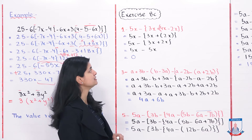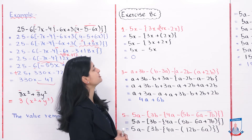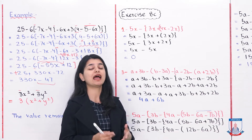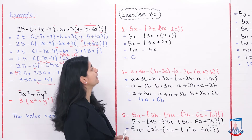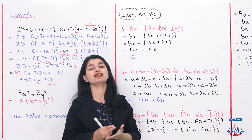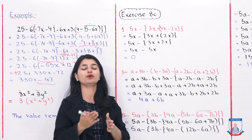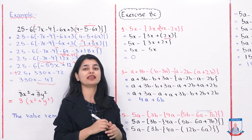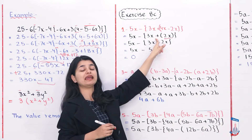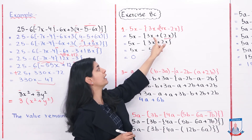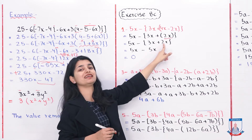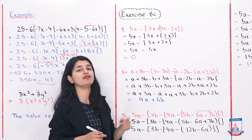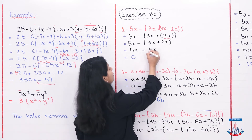Question number 1 is: 5x minus bracket 3x plus parenthesis 4x minus 2x, parenthesis closed, and then another bracket. Here they have used 2 different types of brackets. You have to start with the innermost one, which is the parenthesis with 4x minus 2x. Since 4x and 2x are like terms, you simplify them: 4x minus 2x gives 2x. Now inside the bracket only 2x remains.